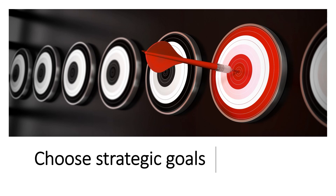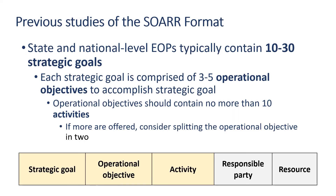One strategic goal of this project plan could be: a public health EOP is available to guide multi-sectoral emergency response operations. Previous studies of the SOAR format have revealed that state and national level EOPs typically contain about 10 to 30 strategic goals. Each strategic goal is typically comprised of about three to five operational objectives. Operational objectives should then contain no more than 10 activities — if there are more, consider splitting them up into two operational objectives instead of one.